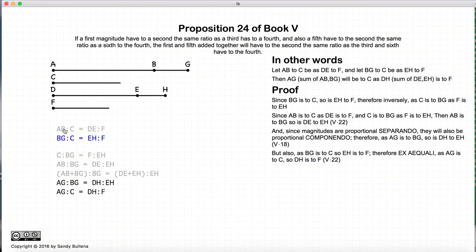Now we had that BG to C is equal to EH to F, and we have AG to BG, DH to EH. So again if we sort of just take the BG here and the BG there, and the EH and the EH here, according to Proposition 22, we have that the ratio of AG to C is equal to the ratio of DH to F.